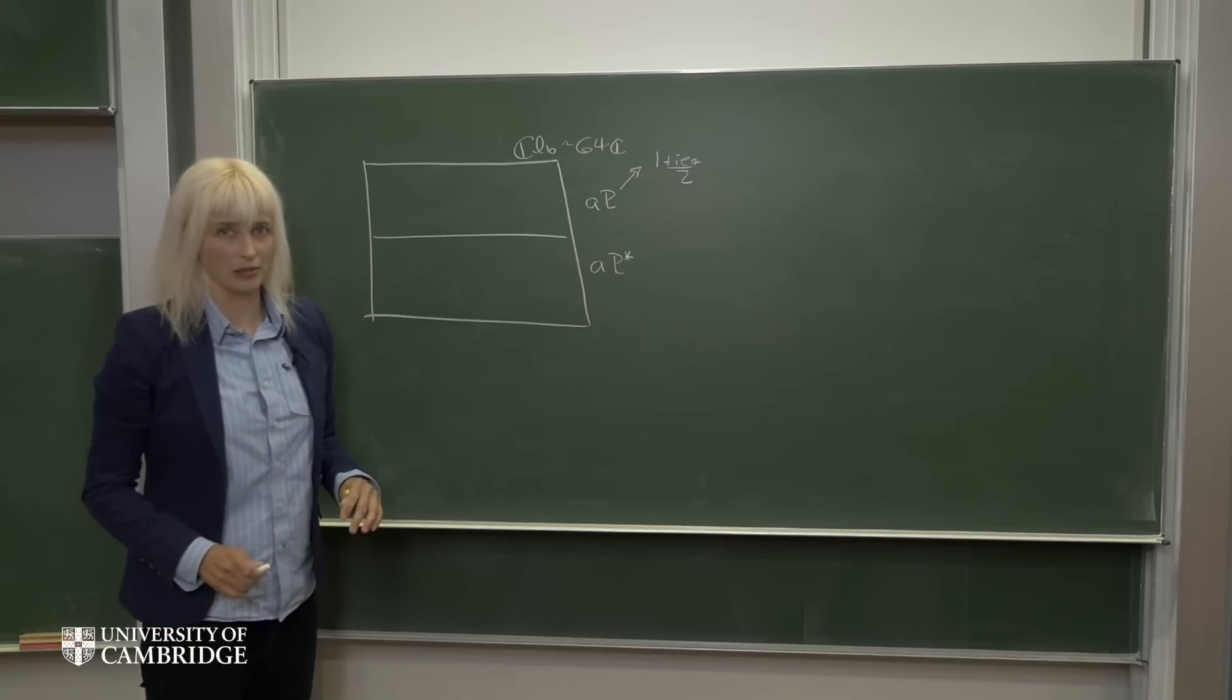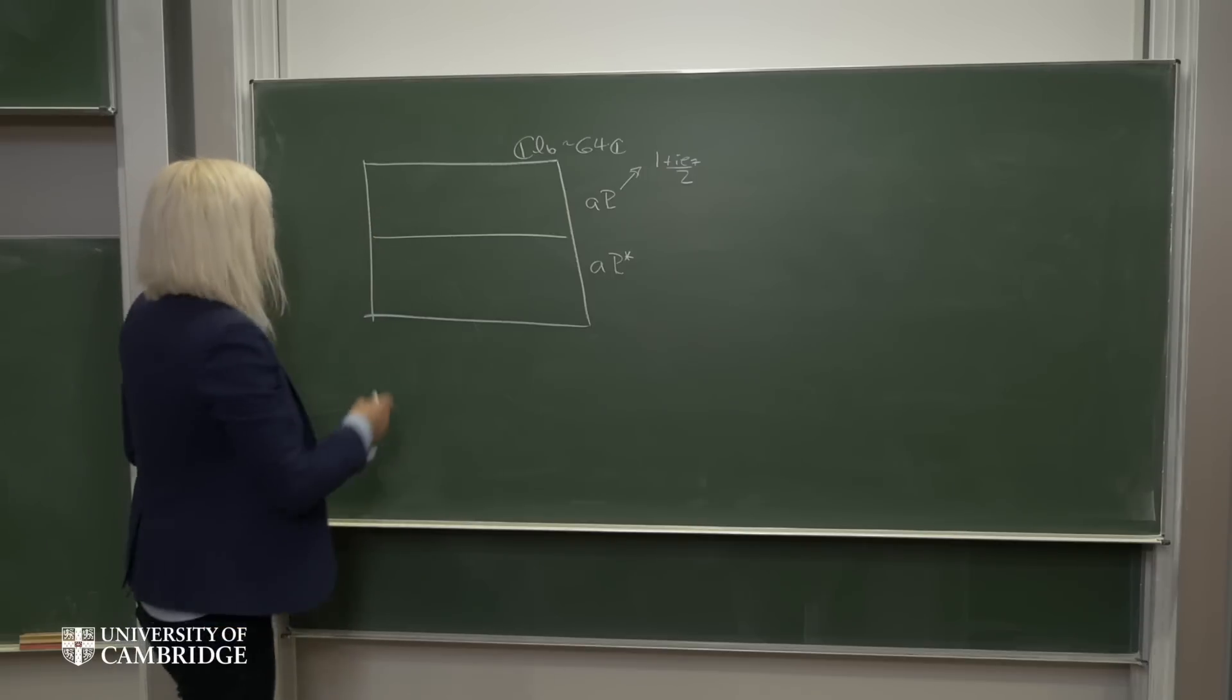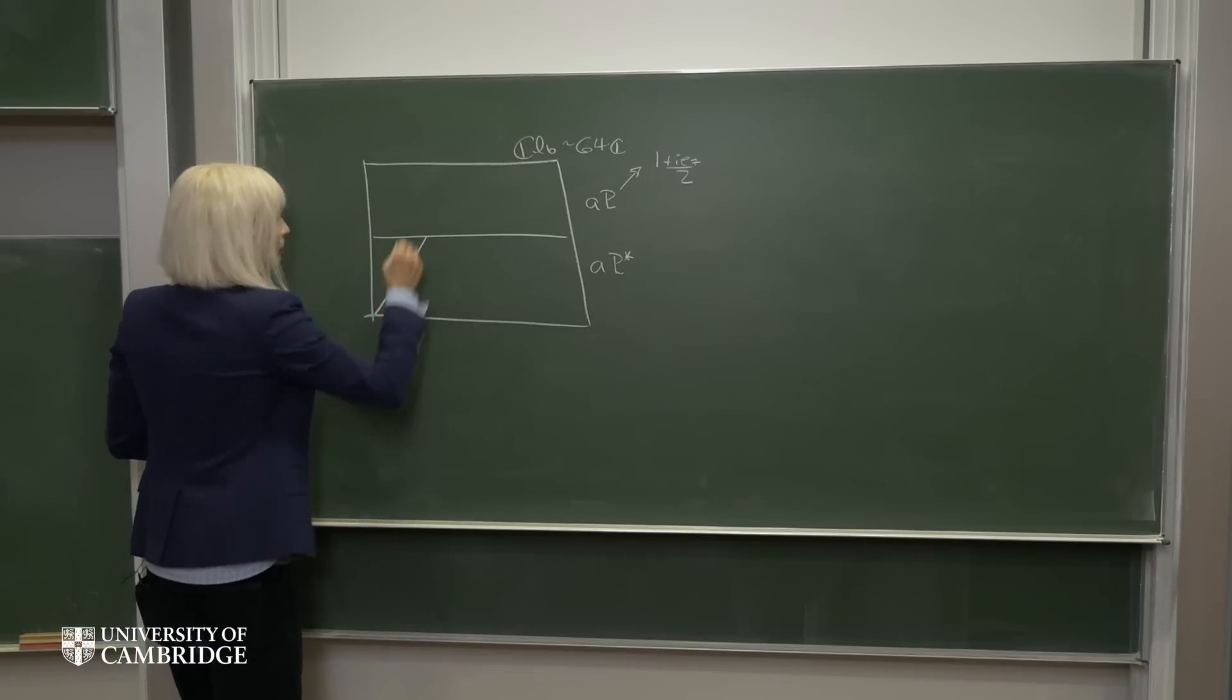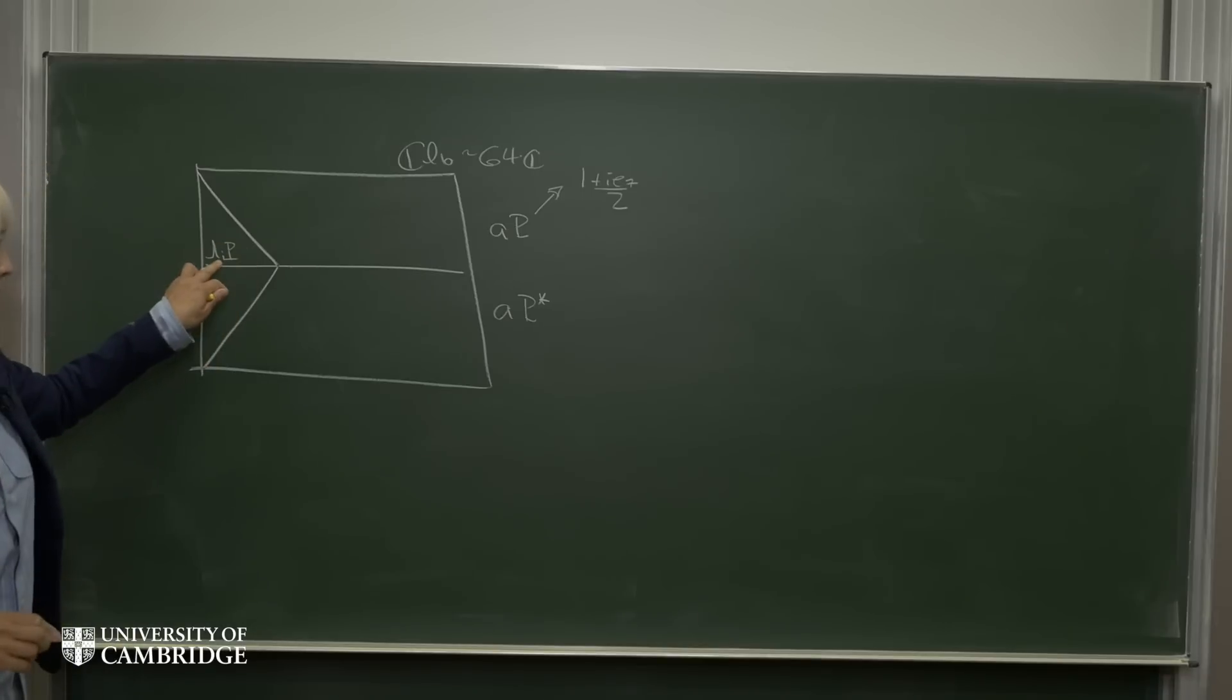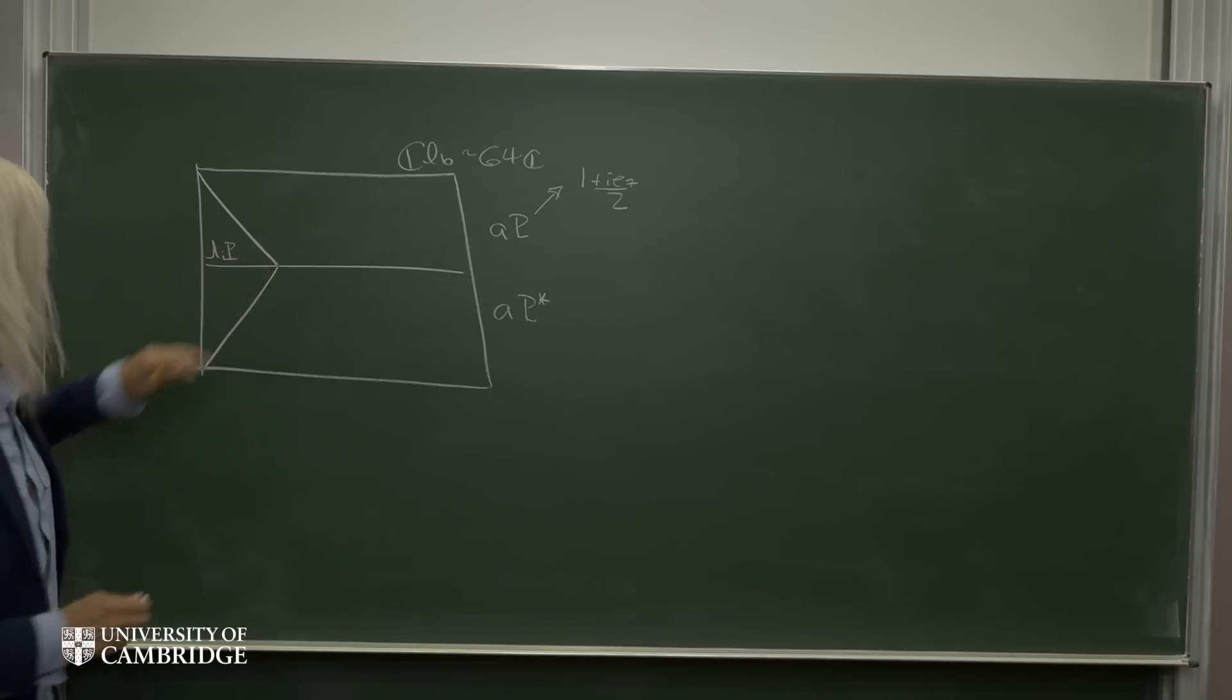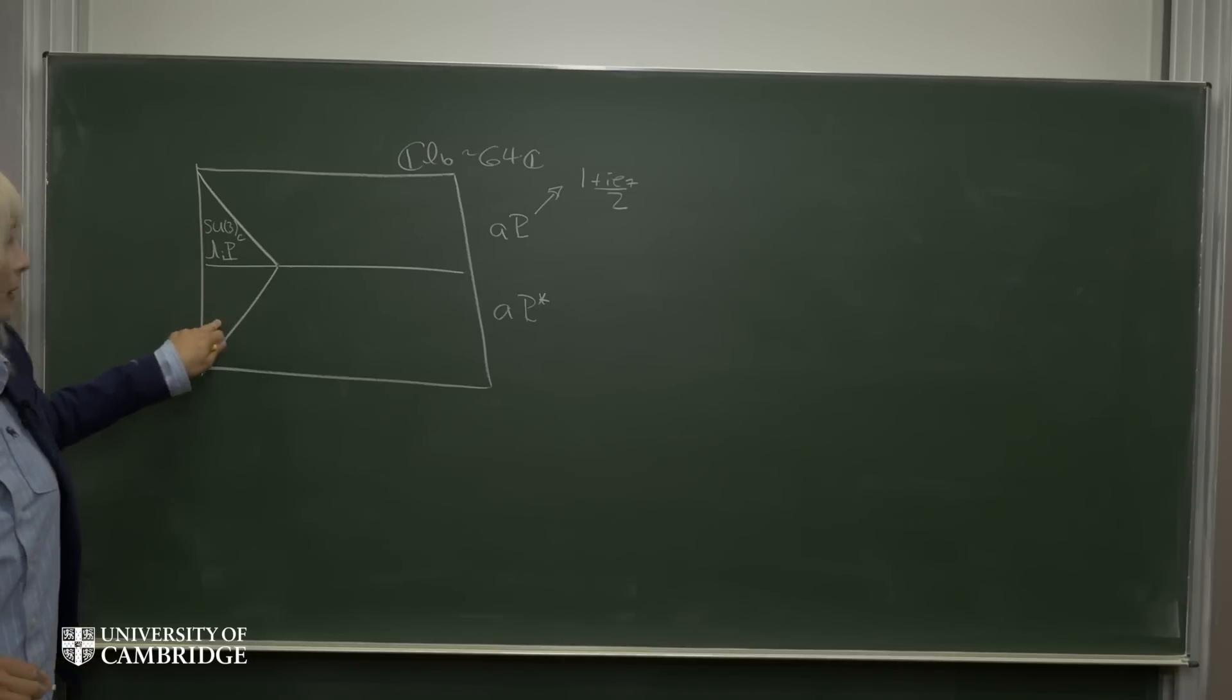So the next thing we can do now is we can identify SU generators in these spaces. So it so happens that there's eight SU generators of this form in the top half space. So those are going to generate SU color. And there's an analogous set of eight in the bottom here.